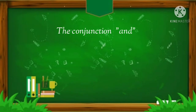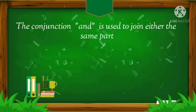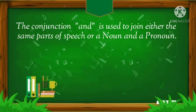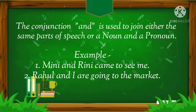The conjunction 'and' is used to join either the same parts of speech or a noun and a pronoun. For example: Mini and Rini came to see me. Second example: Rahul and I are going to the market.